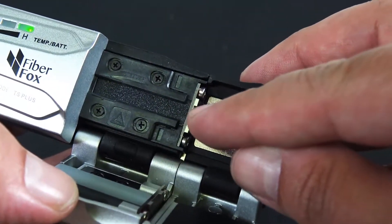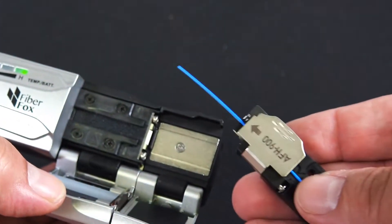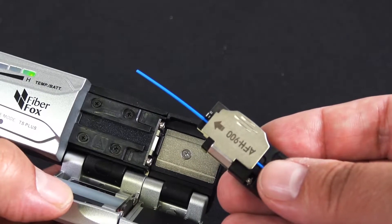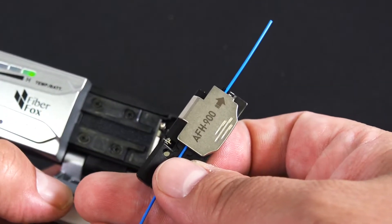Now keep in mind that the width right here is good for single fiber or also ribbon fiber. Now you do have to use the fiber holders by FiberFox. This is for the 900 micron and there's also the 250 micron available.